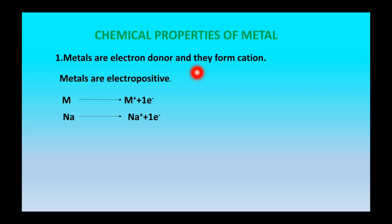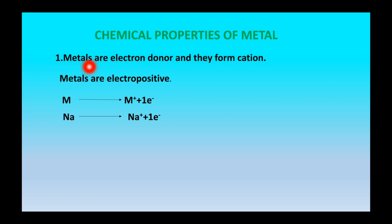Hello students. In the last video we have seen the physical properties of metals and non-metals. In this video we are going to study about the chemical properties of metals. The first chemical property: metals are electron donors and they form cations. Metals are electropositive.